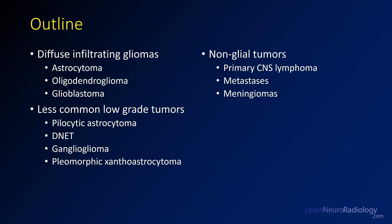There are a variety of primary brain tumors. The most common are the diffuse gliomas including astrocytoma, oligodendroglioma, and glioblastoma. There are a number of other less common low-grade tumors like pilocytic astrocytoma, DNET, ganglioglioma, and PXA. There are also a number of non-glial tumors that you can get in the brain, which we'll cover as well.